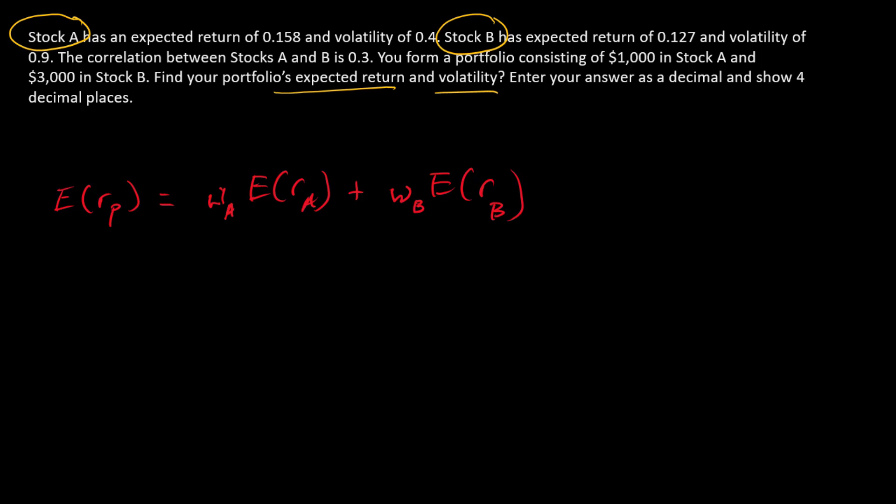Now, in order to calculate all of these things, we need weights. So up here, we'll go ahead and calculate our weights and use them for reference later. We know that the weight in any particular component is the dollars in that component divided by the total dollars in the portfolio. So we've got $1,000 in A and $3,000 in B.